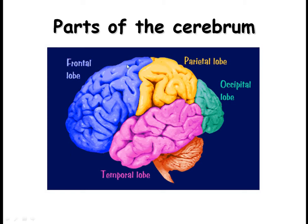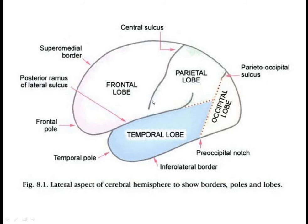The cerebrum is divided both functionally and structurally into four major lobes: the frontal lobe, parietal lobe, occipital lobe, and temporal lobe. The central sulcus divides the frontal lobe and parietal lobe, while the temporal lobe is separated from the frontal and parietal lobes by the posterior ramus of the lateral sulcus. The parieto-occipital sulcus divides the parietal lobe from the occipital lobe. These three sulci divide the cerebral cortex into four lobes.